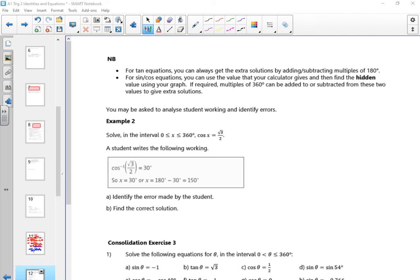Right, and this is quite a quick vid. So this is on your page 12 before the consolidation exercise. So it says for tan you can always add or subtract multiples of 180, and for sine and cos, well that doesn't make sense what it says there does it? It used to be a picture. But you can use the graph really to be fair.